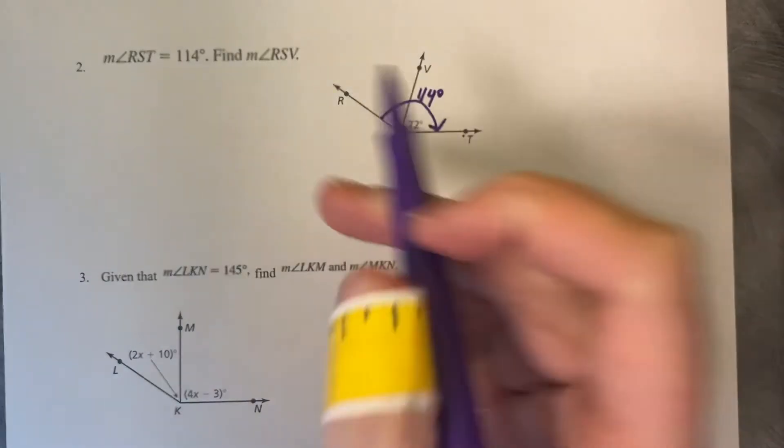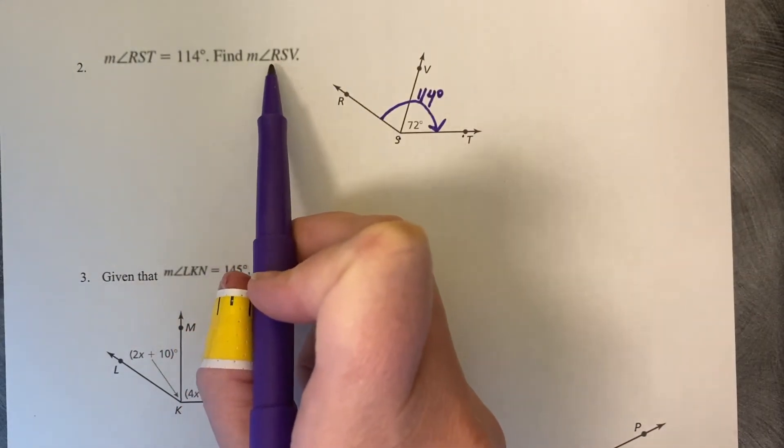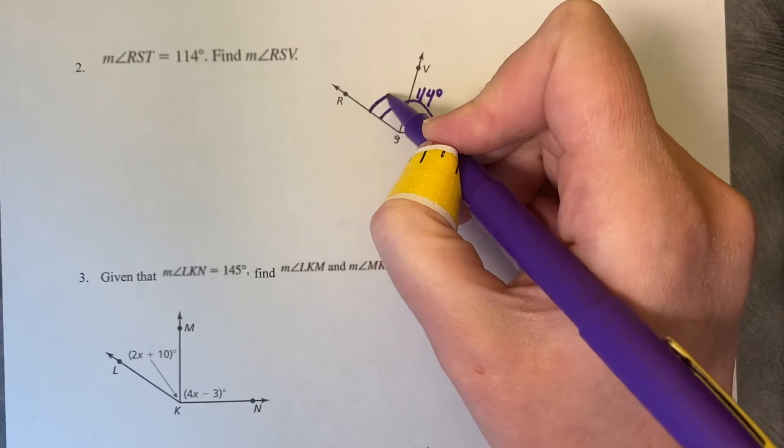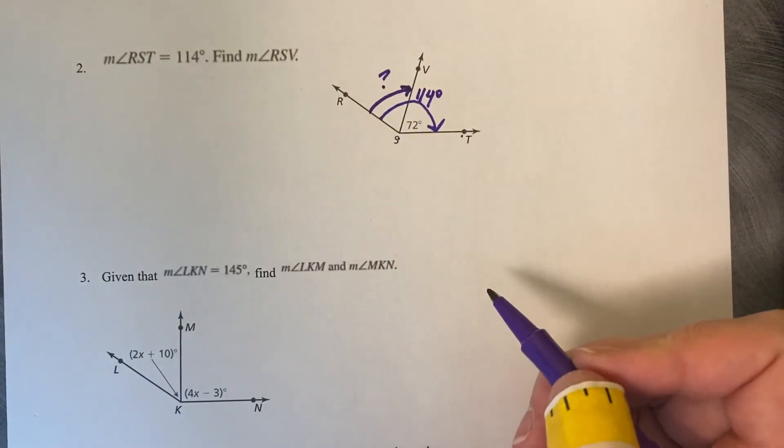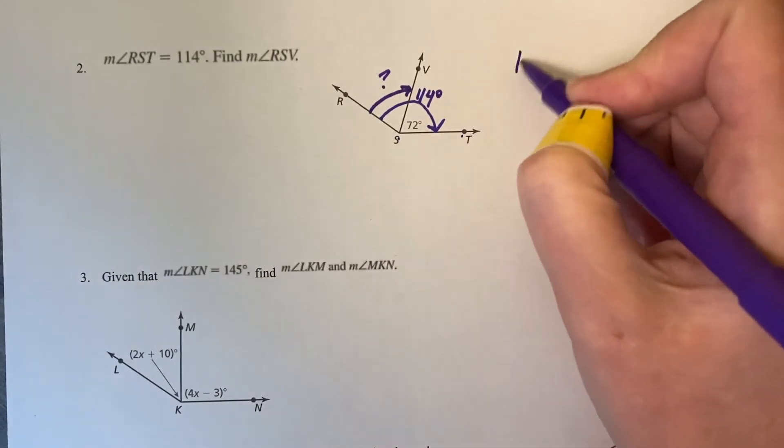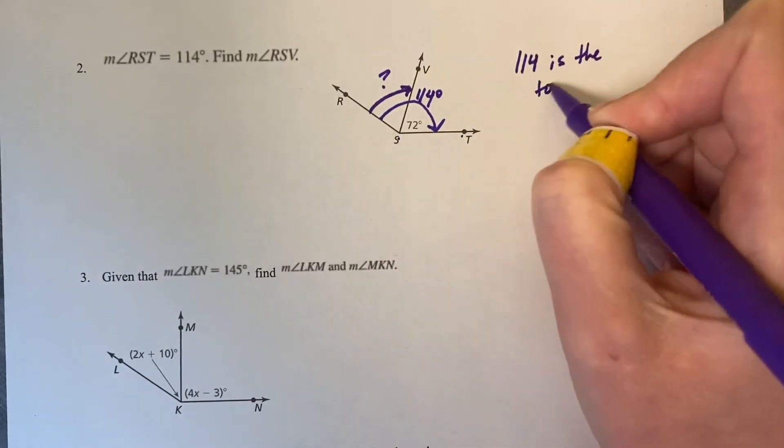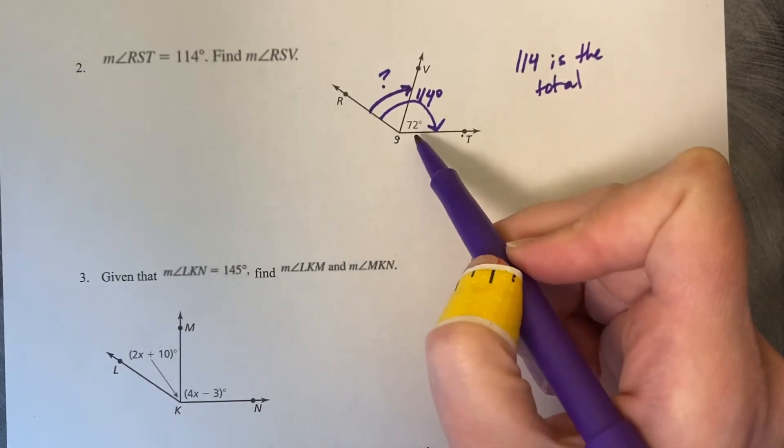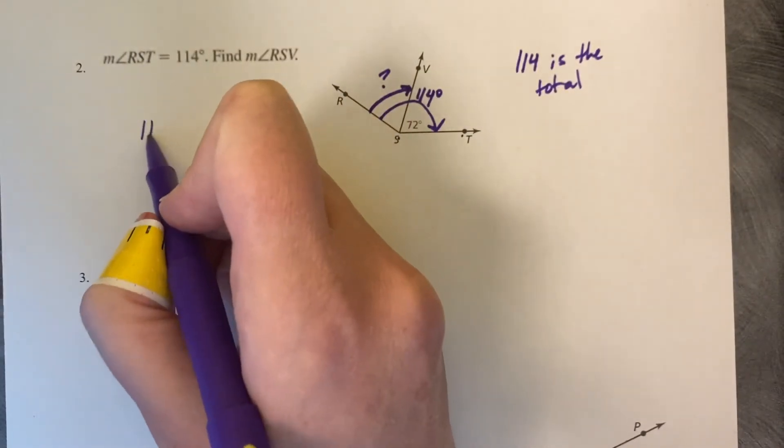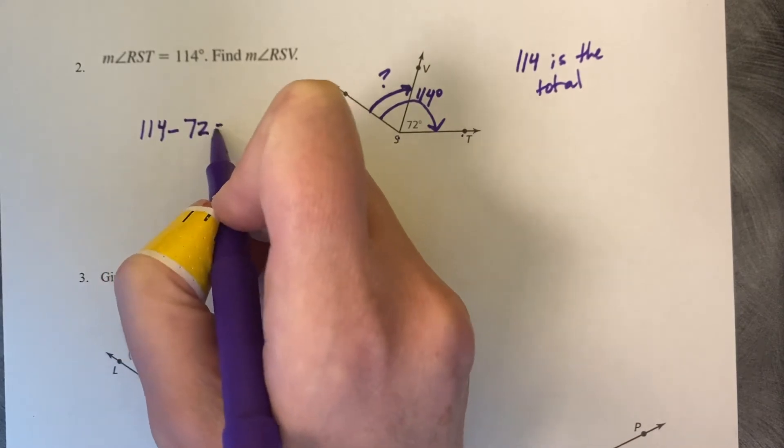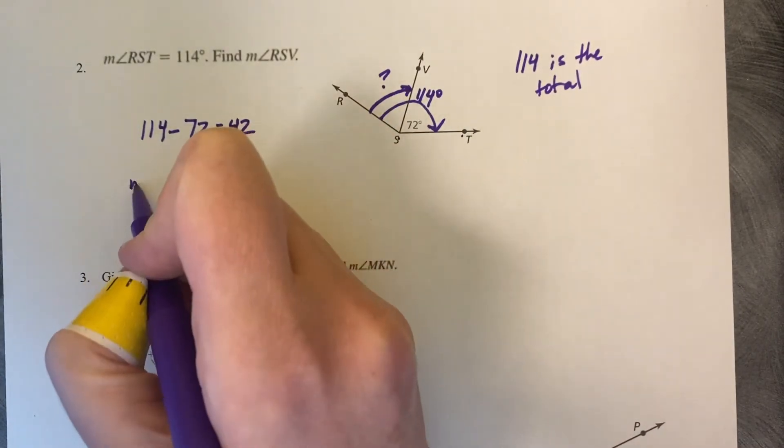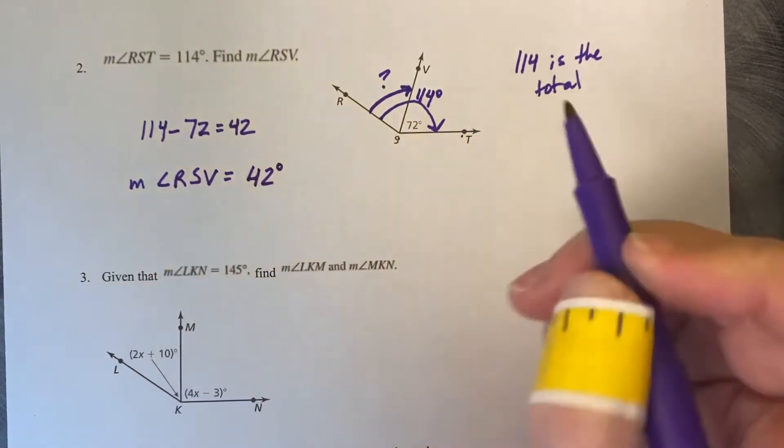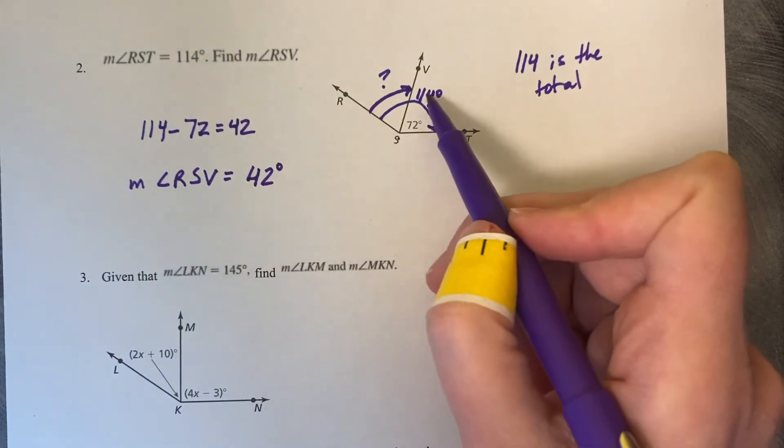Now the directions say to find the measure of RSV, R to S to V. So we'd like to know how much is this portion. Well 114 is the total angle measure. We know VST is 72 degrees. So in this case we can use subtraction. 114 minus 72 is 42. So the measure of angle RSV is 42 degrees. 42 plus 72 is 114.